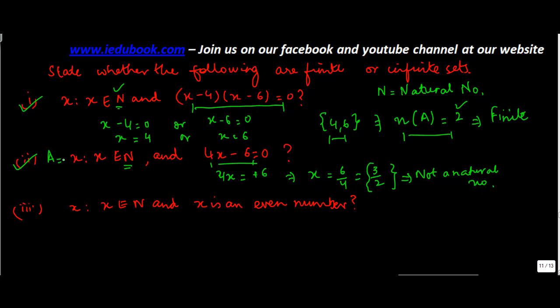So therefore, if this set was A, let's call all these three as A. So A is equal to the empty set. Why? Because the solution that we got for this was not a natural number. But even if it is 0, then n(A) is equal to 0, and what we learned was that this 0 is also a finite number.